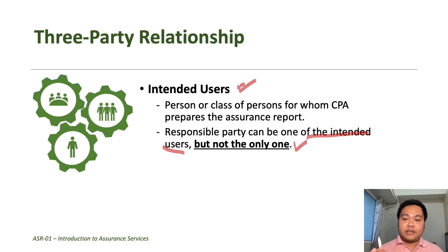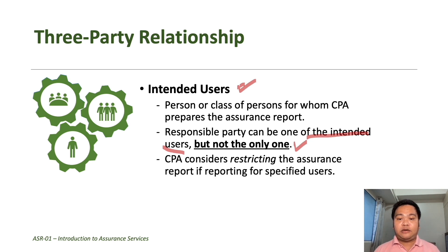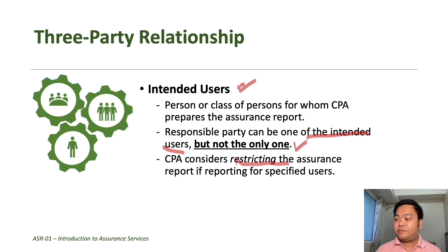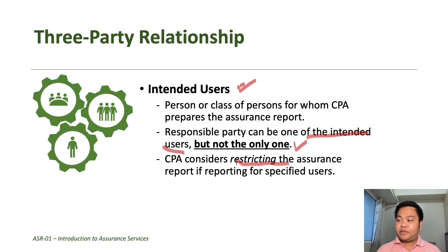In certain circumstances, the engagement will have specific users only. For example, a bank may request information about the quality of the receivables of an entity. When engagements are designed for specified intended users or for specific purposes, the practitioner should consider restricting the assurance report to those specified users only. Unlike the audit of financial statements — where the audit report is normally available publicly due to the wide range of users — if the users are specified, the assurance report should be made available only to those specified users.